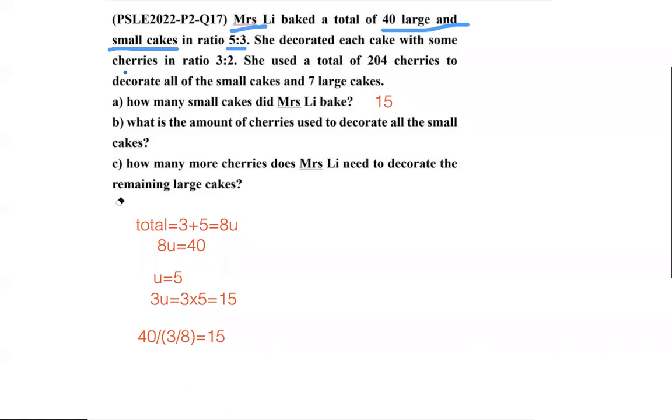Let's do part B. I feel this working is still necessary to go on with part B, so I'm going to leave it there. We know that the number of cherries for large to small cakes is 3:2.